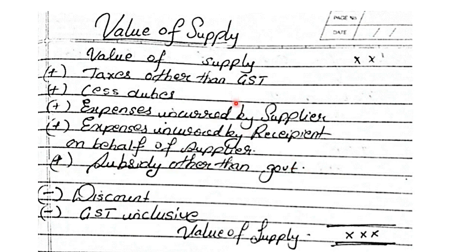When you add up all this, you get the gross value of supply. From that you need to subtract any discount if given, and less GST which is already inclusive if your original value of supply contains GST — you will have to first remove the GST to get the gross value. On that, whatever will be your final value of supply, you will again have to charge GST. So first subtract GST which is inclusive. Whatever net amount you get, that is your value of supply.